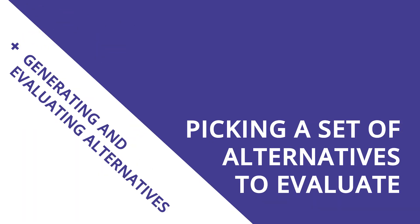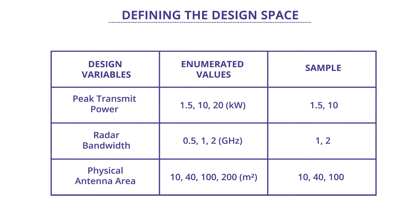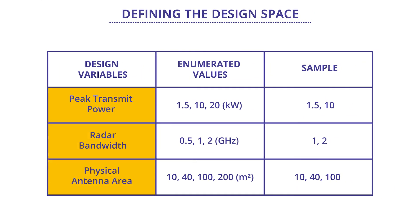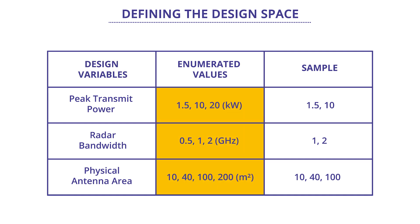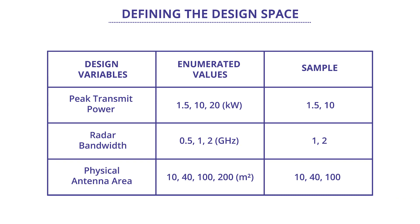In this segment we're going to talk about picking a set of alternatives to evaluate. First let's return to the concept of a design space. The design space is the span of our design vectors, which is the parameterization of the concepts that we're looking to trade. The design vector is specified in terms of design variables, each of which has an associated range and expected values it's allowed to take. These are derived from the concepts generated earlier in the activities. The process by which we define our potential design space is called enumeration.